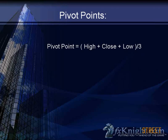The formula for a pivot point is the high and the low and the close of the prior period divided by 3. High plus low plus close divided by 3. Does anyone know why we don't just take the high and the low and divide by 2? What's the advantage of doing it this way?